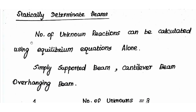What is a statically determinate beam? In statically determinate structures, the number of unknown reactions can be calculated using equilibrium equations alone. Examples include simply supported beams, cantilever beams, and overhanging beams. In statically determinate beams, the number of unknown forces can be calculated by the number of equilibrium equations.